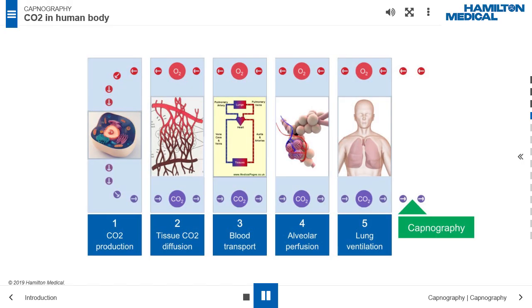Respiration is the process of transporting O2 from the ambient air to the cells and transporting CO2 from cells into the air. We will now take a closer look at how CO2 is removed in five consecutive steps.